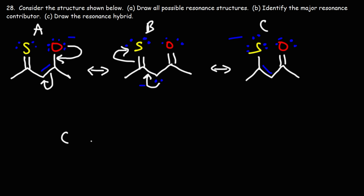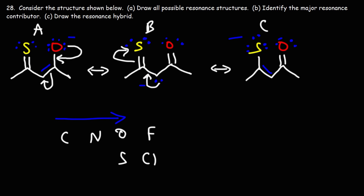So in the periodic table, here's carbon, nitrogen, oxygen, fluorine, and here's sulfur. If we were to compare oxygen versus carbon, we know that oxygen is more electronegative than carbon. Therefore, oxygen can better stabilize a negative charge than carbon. So structure B is the least stable.